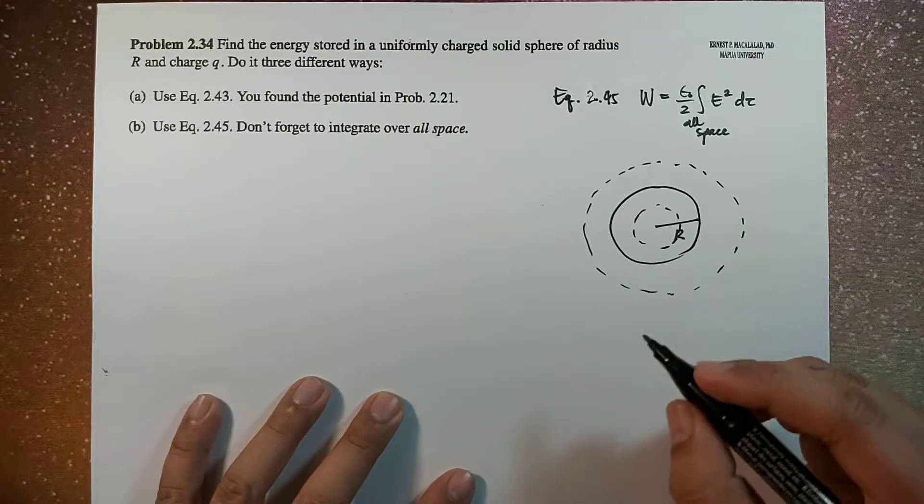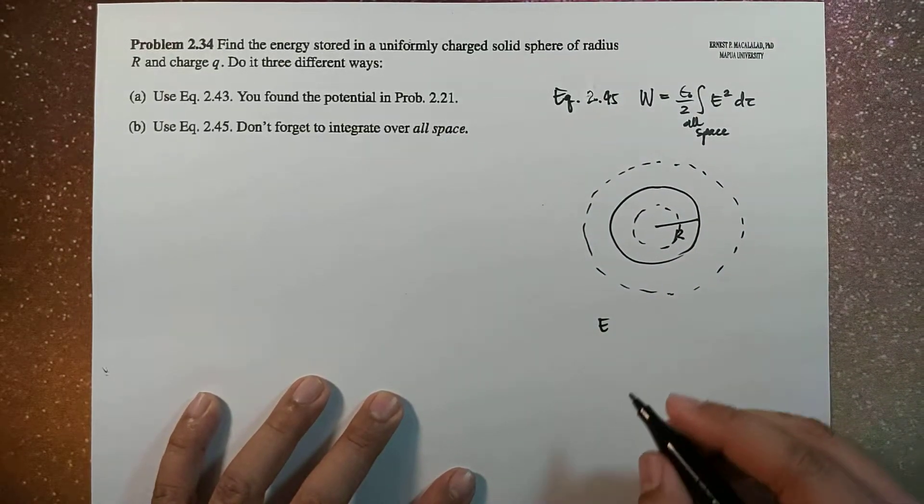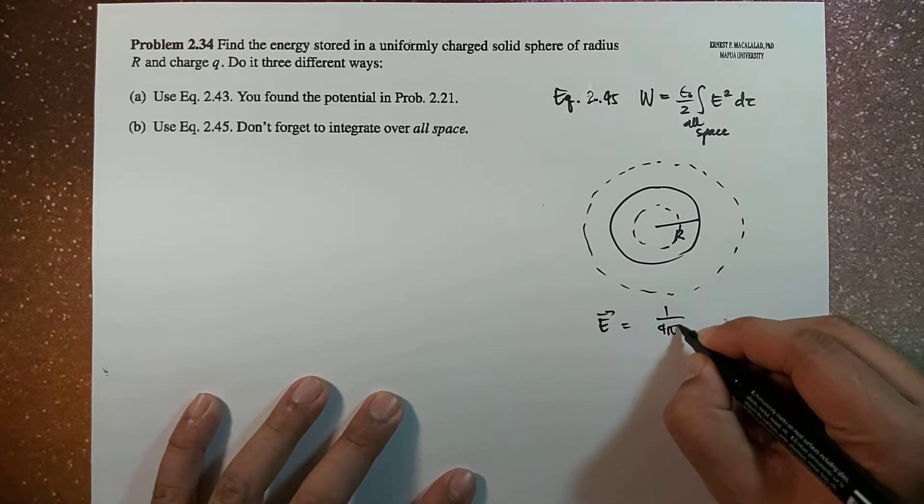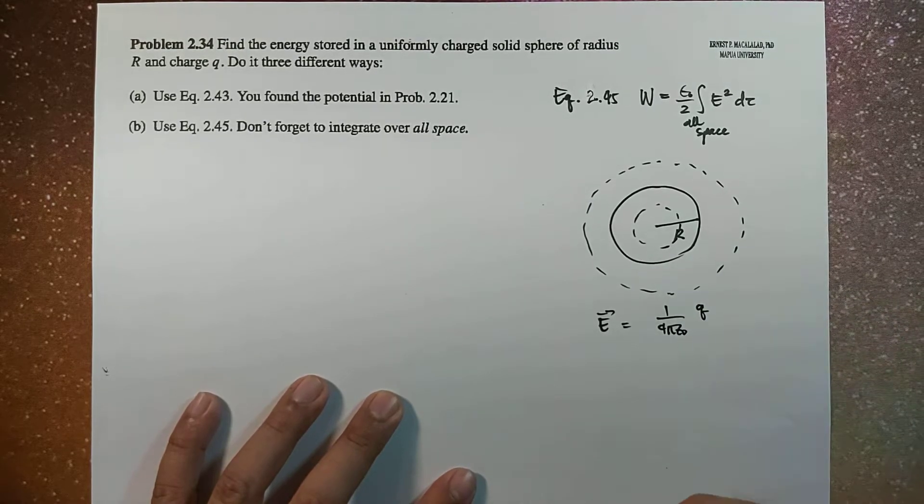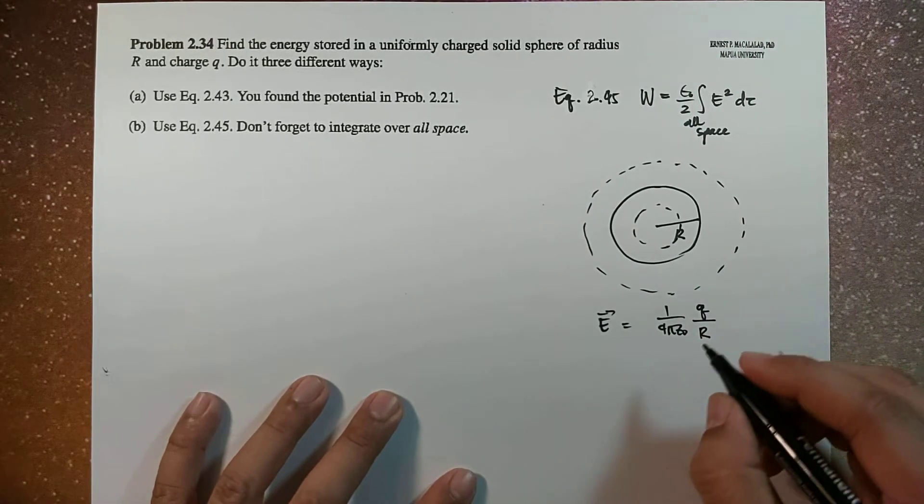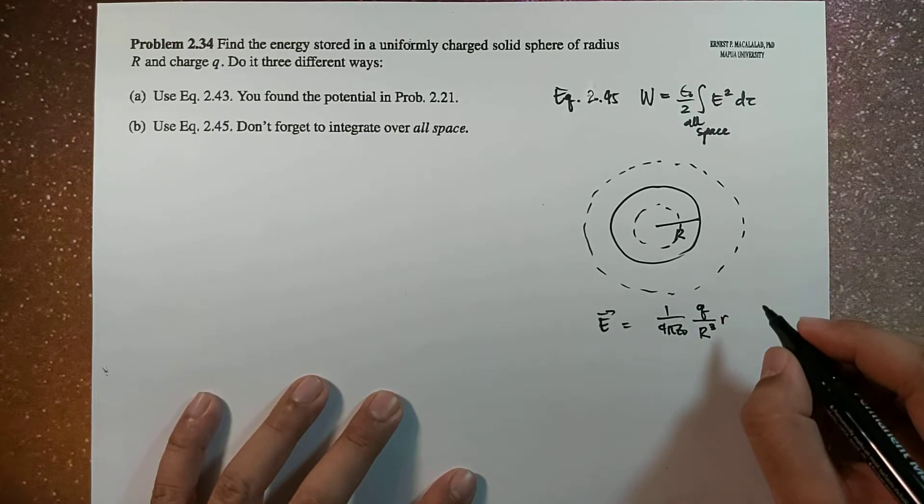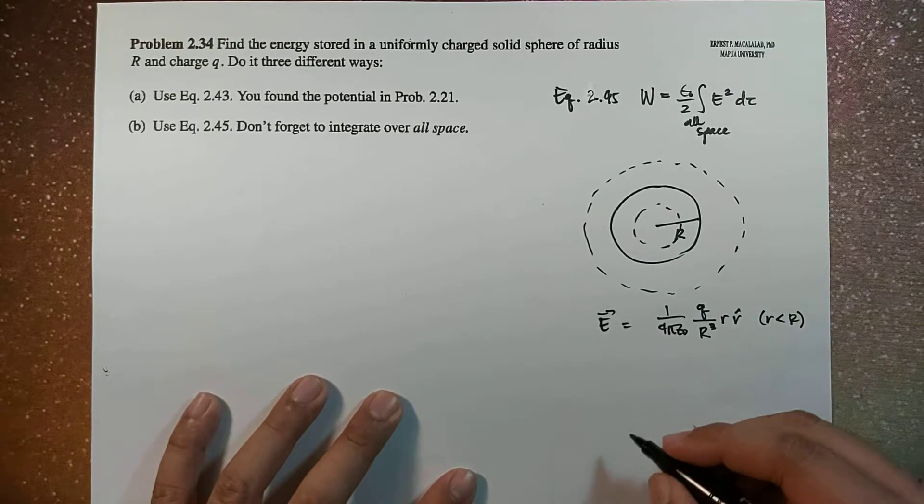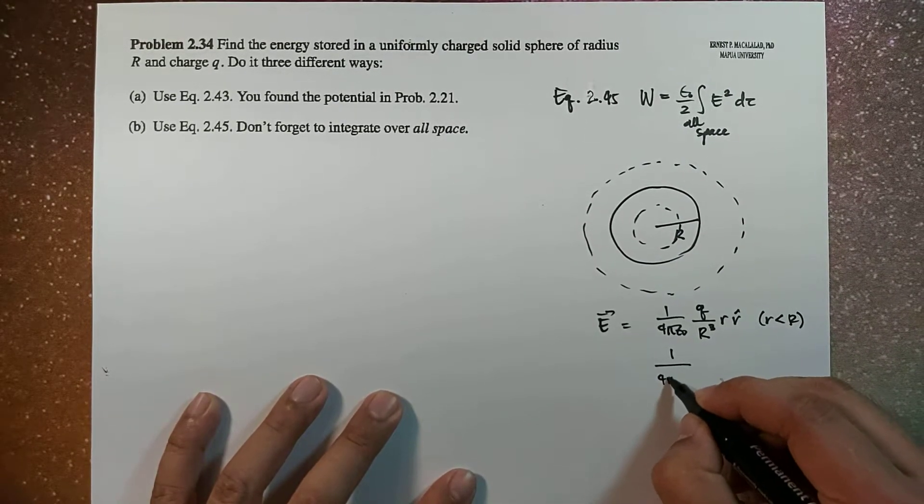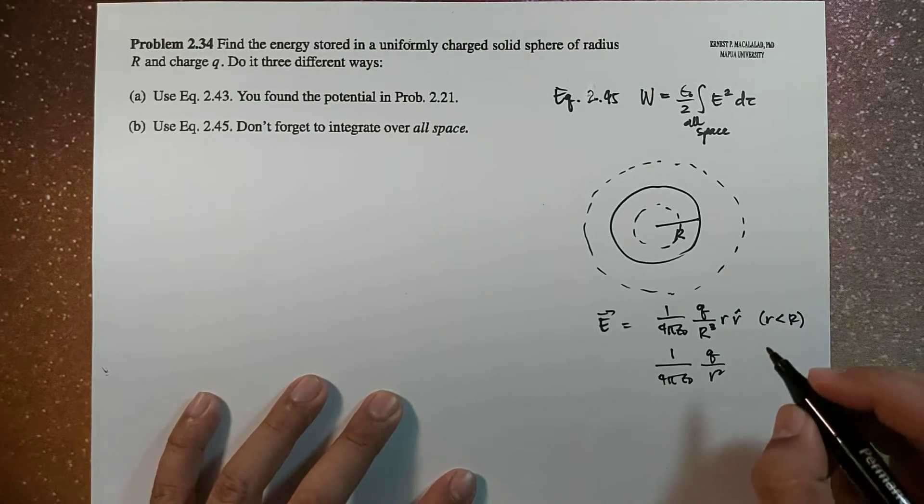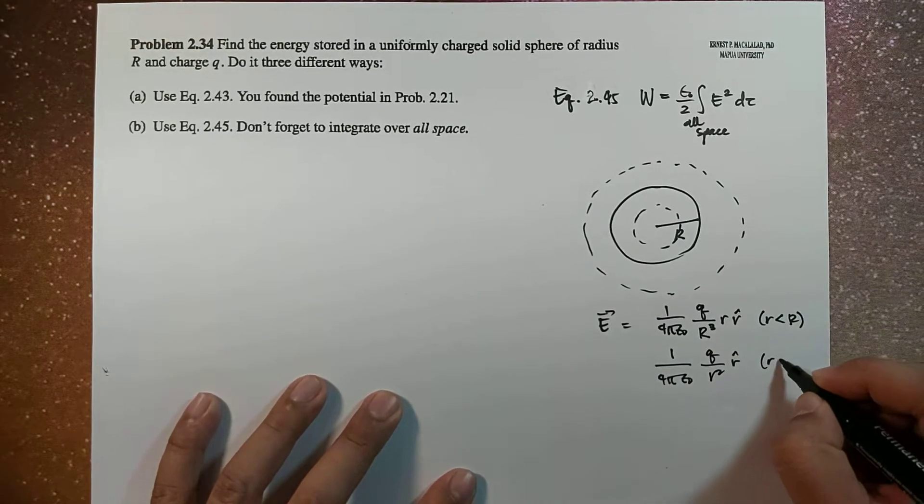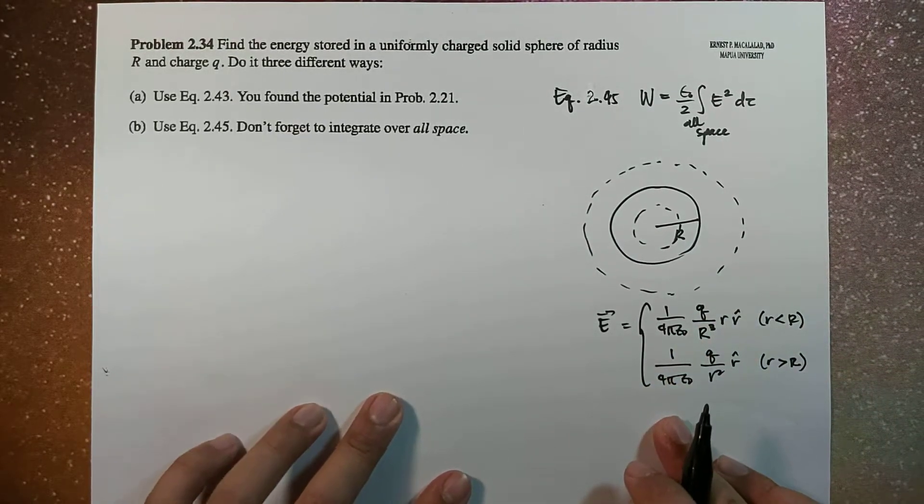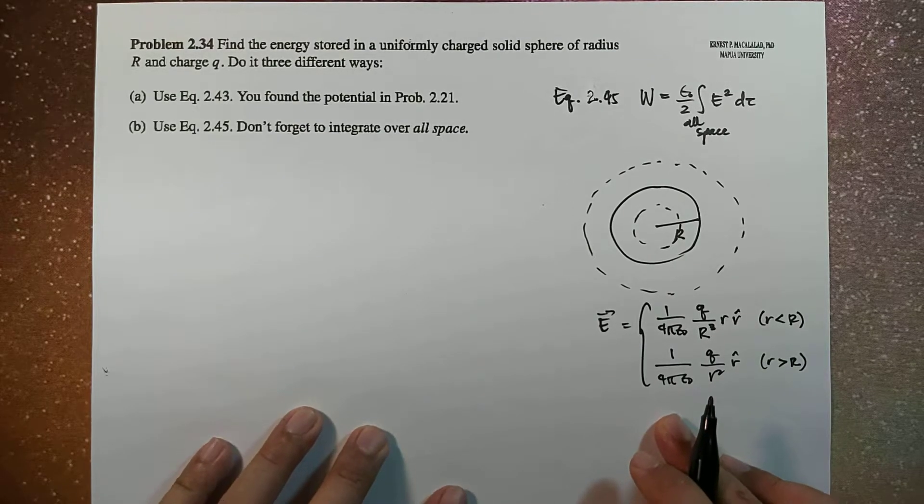And we already know that the electric field inside would be equal to 1 over 4 pi epsilon naught times Q over capital R cubed times r r hat. So this is for r less than R. And this is also equal to 1 over 4 pi epsilon naught times Q over r squared r hat for r greater than R. So we already found this before in our previous examples using Gauss law.